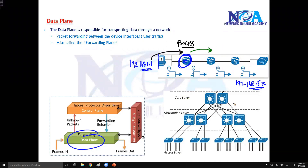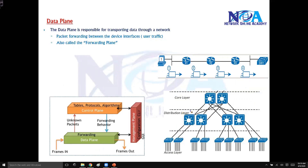In a LAN we generally call the unit a frame. Switches also forward traffic out of a specific interface, depending on whether it is based on L3 addresses in case of routing, or MAC addresses in case of switches. So the data plane refers to the actual forwarding of your packet from one interface to another interface. It is also referred to as the forwarding plane.